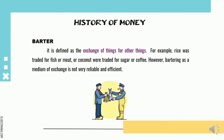For example, rice was traded for fish or meat, and coconut was traded for sugar or coffee.